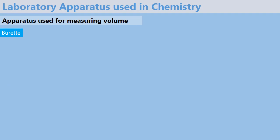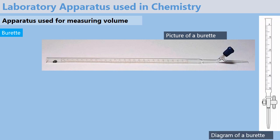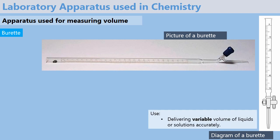The next apparatus is the burette. Here is a nice picture. As you can see, it has a long tube, and this part here is known as the tap of the burette. You can never have a burette without the tap. A nice diagram represents a burette in upright position. A burette is used for measuring or delivering accurate variable volume of liquids or solutions accurately.